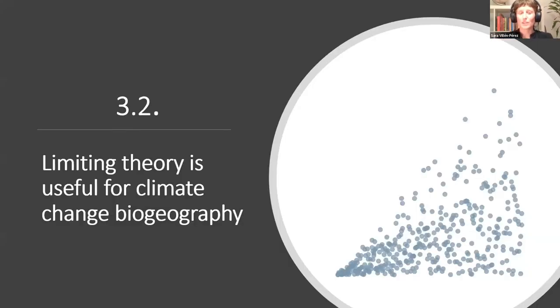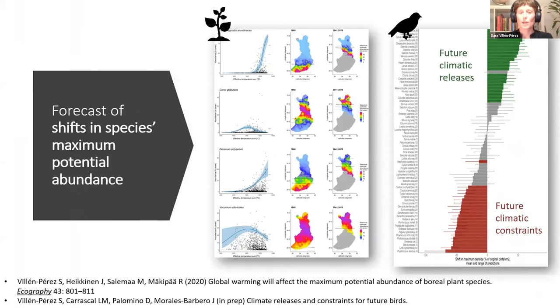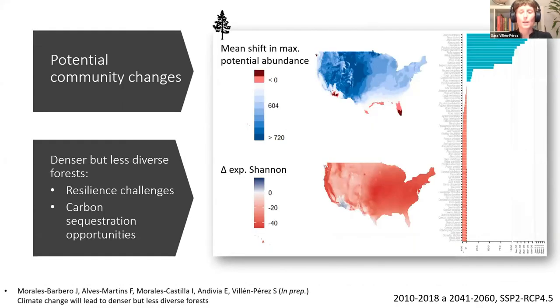The second point of interest is that limiting theory may be useful for climate change biogeography. We are able to forecast shifts in the maximum potential abundance of species, which means we are saying that the abundance of the species in the future will be at any point from zero to an upper limit. This way, we are able to detect climatic releases and climatic constraints and assume that there are other factors that we cannot predict for the future.